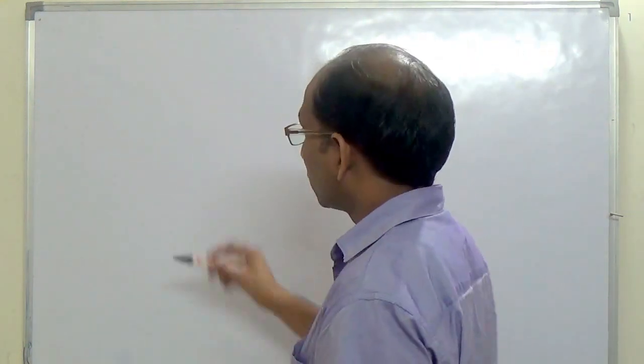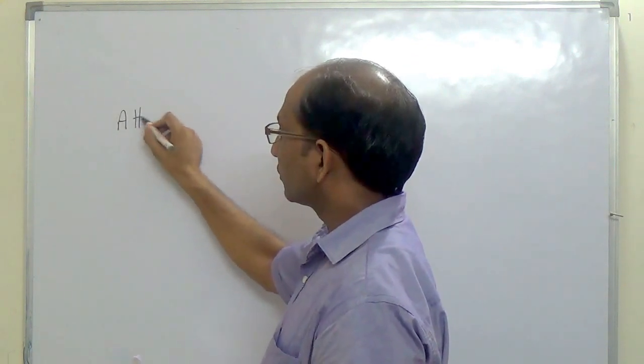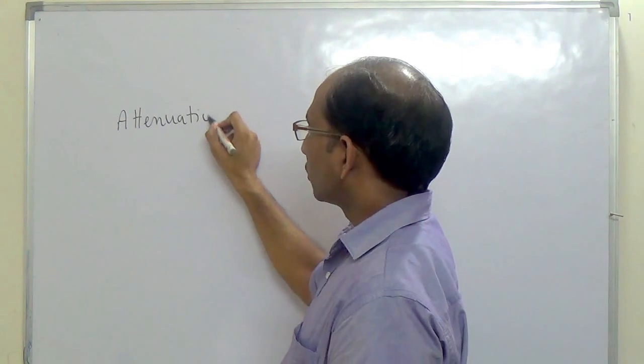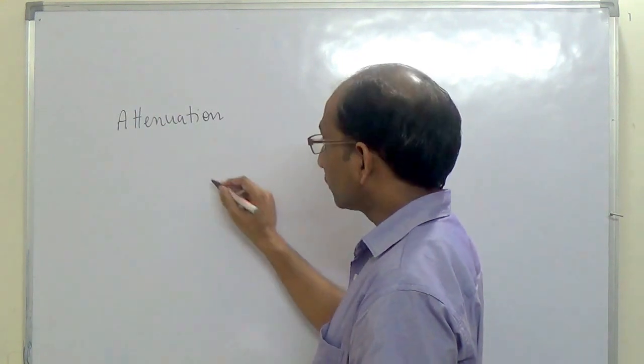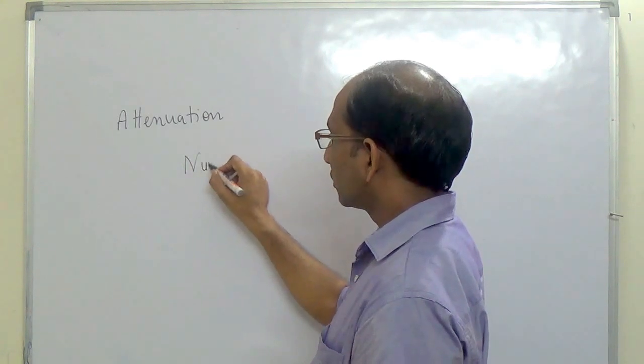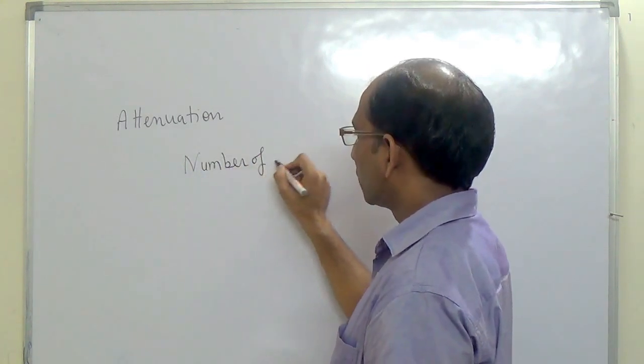In this lecture, I will discuss the numerical problem based on attenuation. Attenuation is the transmission characteristic of the optical fiber. A numerical problem based on attenuation is discussed in this particular lecture. In general, we define the total attenuation in optical fiber by the number of decibels.